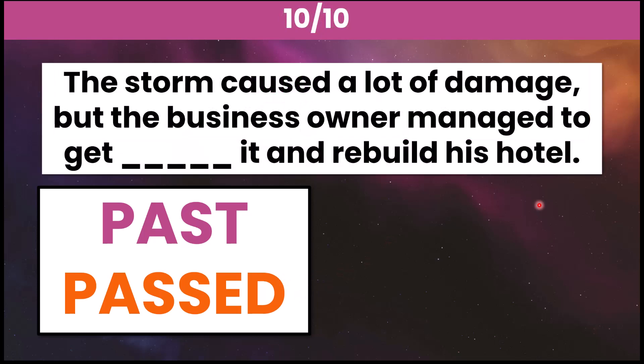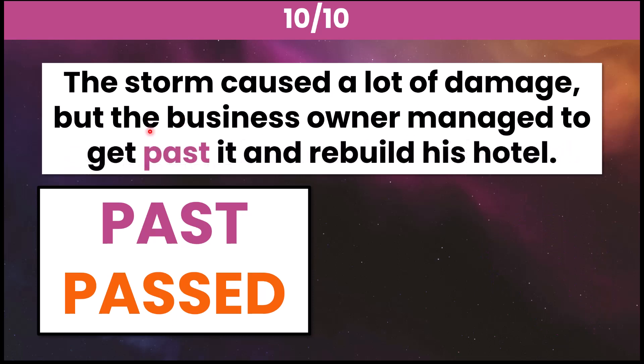Number ten: The storm caused a lot of damage, but the business owner managed to get blank it and rebuild his hotel. Here, the correct answer is past P-A-S-T. To get past it and rebuild his hotel. To get past something is a phrasal verb. It means to get over something, to overcome something.